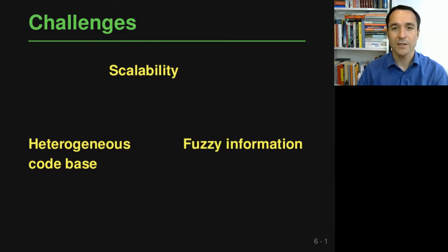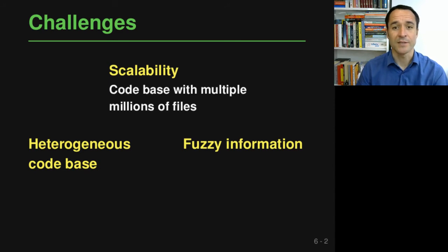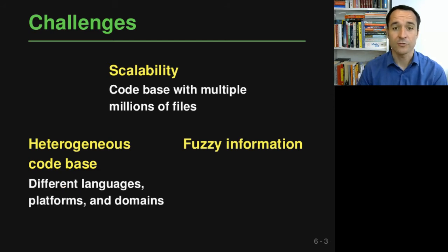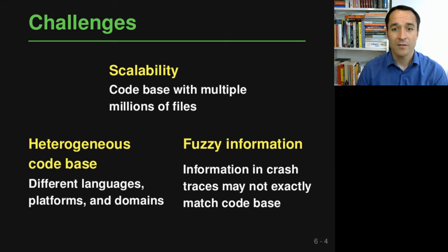To localize a bug given such a crash trace, we need to address a couple of interesting challenges. One of them is about scalability, which here means that we are dealing with a code base that may contain multiple millions of files — too large to really analyze all of these files using static analysis or to do a pairwise comparison between a crash trace and each of these files. The code base is not only large, but also very heterogeneous because it's written in different languages, covers code running on different platforms, and covers various different application domains.